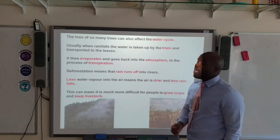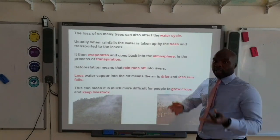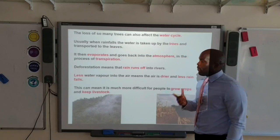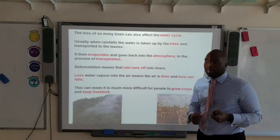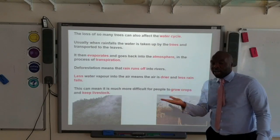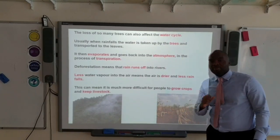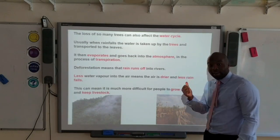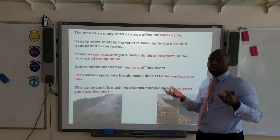Another consequence of deforestation is that it can affect the water cycle. Usually when it rains, the water is taken up by the trees through transpiration up to the leaves, and as this water evaporates it goes back into the atmosphere. With deforestation, the rain runs off and is not being collected by the trees, which means less water vapor goes into the atmosphere. This makes the air drier with less rain, so crops can struggle because they're not getting the moisture they need.